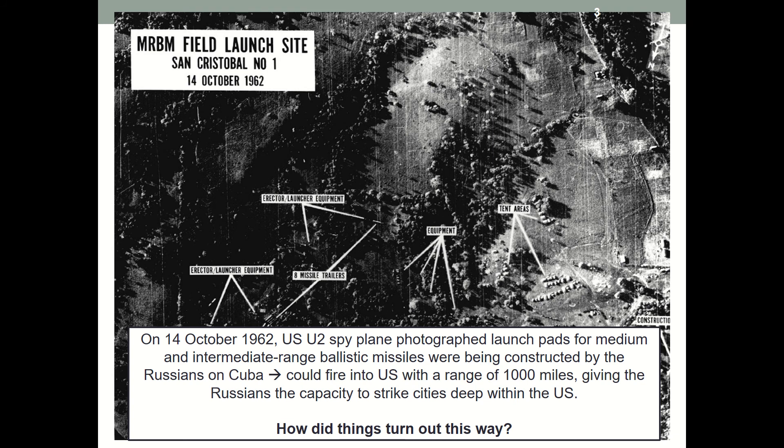On 14 October 1962, a US U-2 spy plane photographed launchpads of medium and intermediate range ballistic missiles that were being constructed by Russians on Cuba. This was very worrying because it means these missiles could fire into the United States with a range of 1,000 miles, giving Russians the capacity to strike cities deep within the United States.